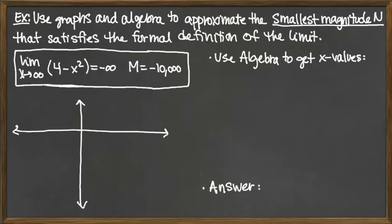In this example, we're going to use graphs and algebra to approximate the smallest magnitude N that satisfies the formal definition of the limit, where the limit we're looking at is the limit as x goes to infinity of the function 4 minus x squared is equal to negative infinity.